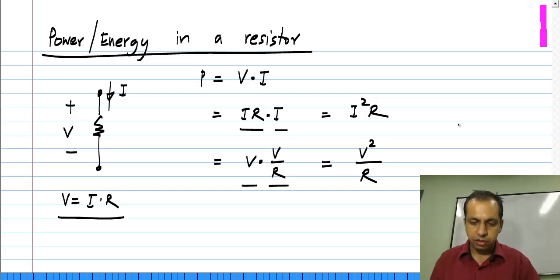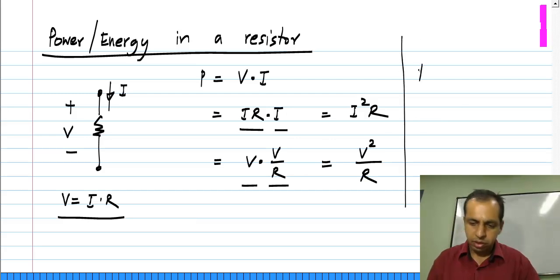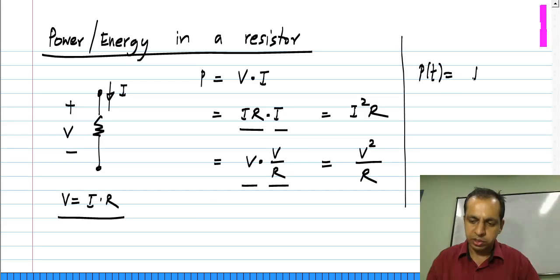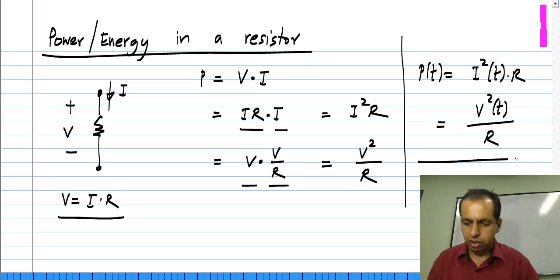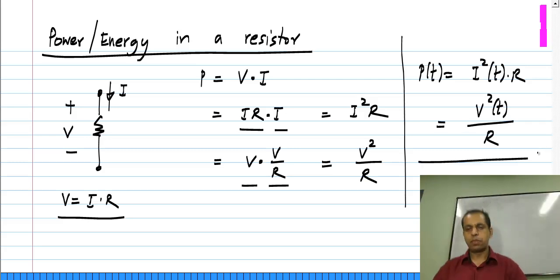Of course, if voltage or current is dependent on time then power will be varying with time, but the expressions will be the same. This is the power delivered to the resistor, which can also be written as V squared divided by R.